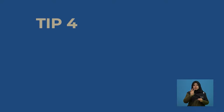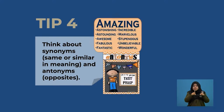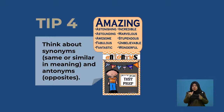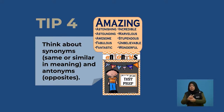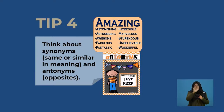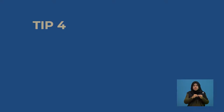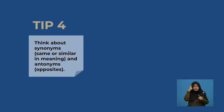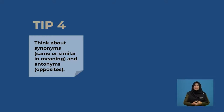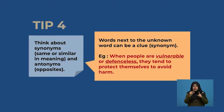Tip 4 is to think about synonyms — words that are same or similar in meaning — and antonyms, the opposites. This is very useful because when you think about words that are similar in meaning, it can give you a better understanding of the sentence. This is relevant because words next to the unknown word can be a clue or synonym.